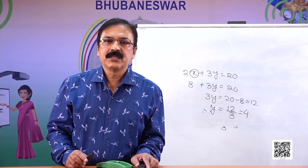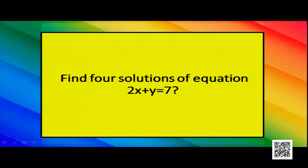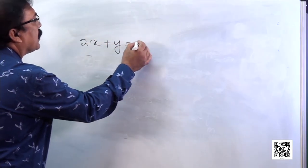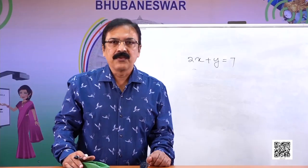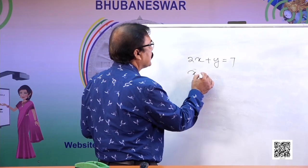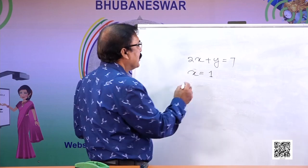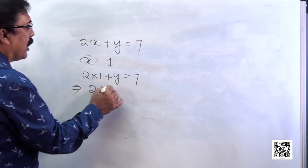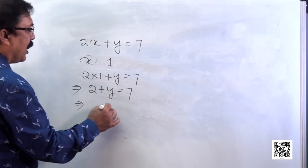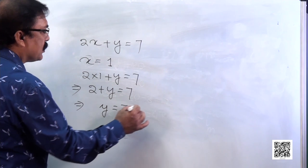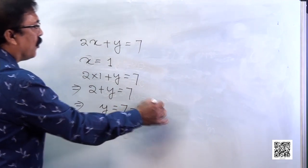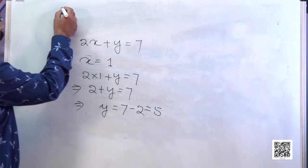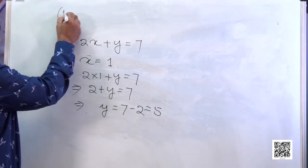Now let us do some sums. Find four solutions of the equation 2x plus y equals 7. It is not necessary that we get solutions in integers only. If we put x as 1, then 2 into 1 plus y equals 7, giving 2 plus y equals 7 and y equals 5. So one solution is (1, 5).